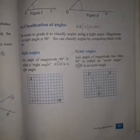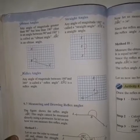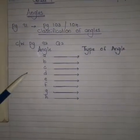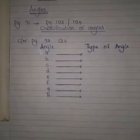Children, you have to draw each and every angle. There are five types of angles, so you have to draw all the angles and write the description. Page 92, Question number 2 — you have to do for classwork. You have to write the angles A, B, C, D, E, F, G, H and the type of angle.